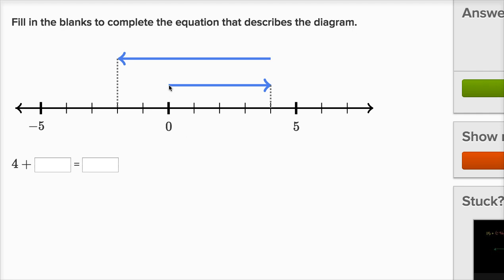If we start at zero and we move one, two, three, four spaces to the right of zero, this arrow right over here represents positive four, and we already see that right over here in the equation.